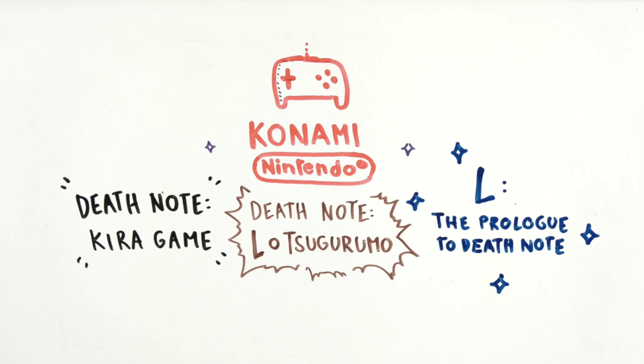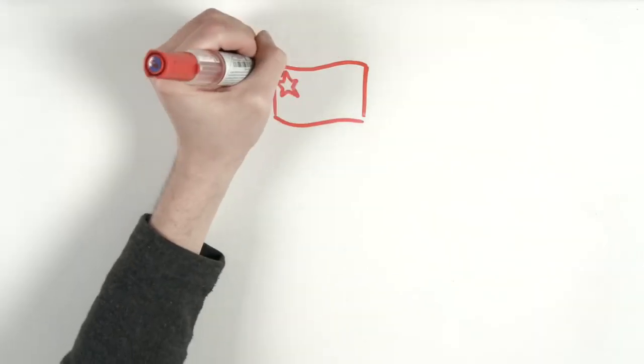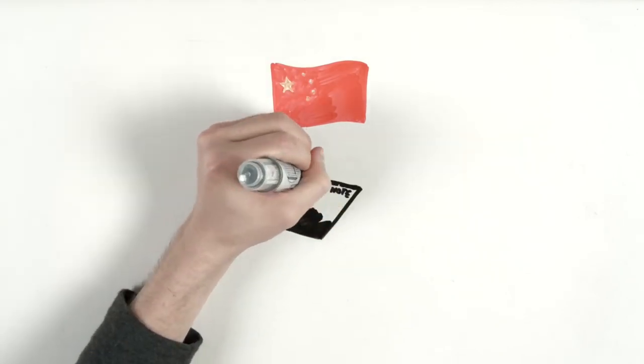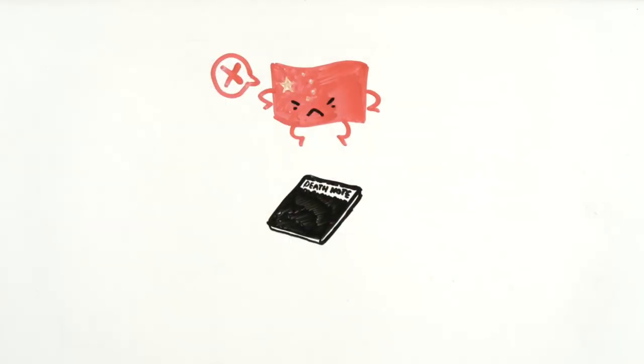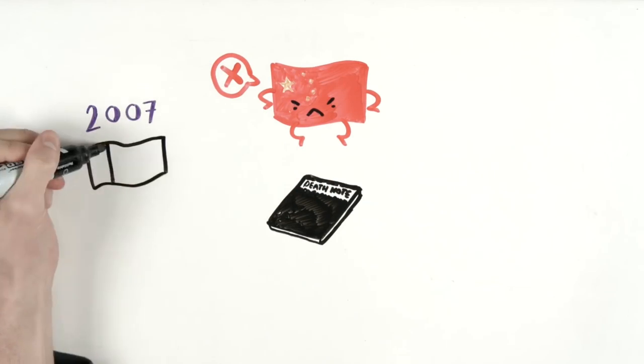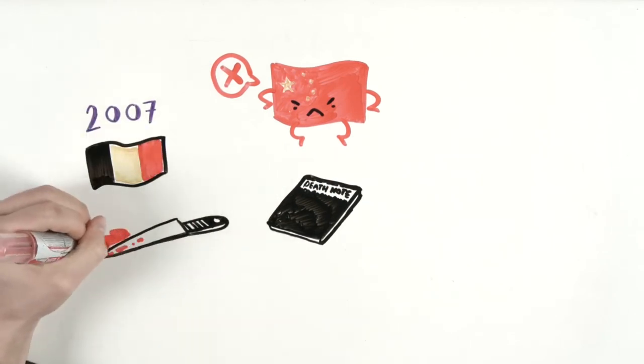By the way, China banned Death Note because students were altering notebooks to resemble Death Notes. Something like that also happened in the U.S. In 2007, two notes written with Latin characters stating 'I am Kira' were found near the partial remains of a male in Belgium.